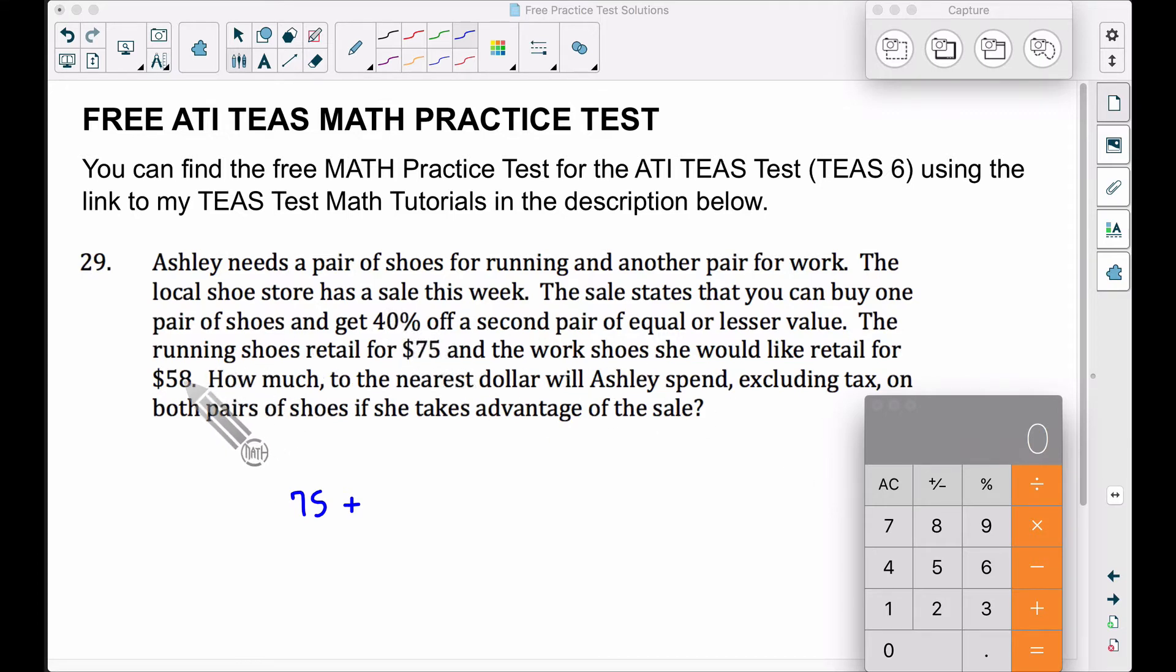We get 40% off of this $58 pair of shoes. So if you find 40% of $58, we get $23.20.